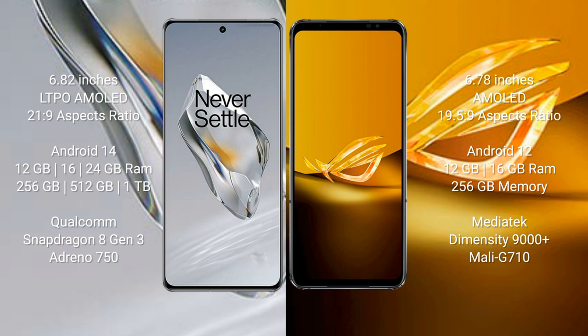The OnePlus 12 runs on the Android 14 operating system, while the ASUS ROG Phone 6D runs on Android 12. The OnePlus 12 comes with 12GB, 16GB, or 24GB RAM, and 256GB or 512GB or 1TB internal storage.